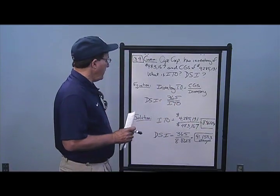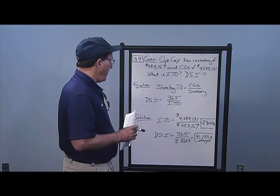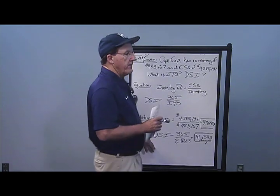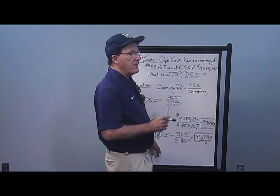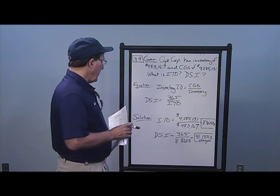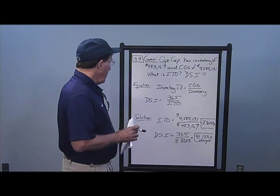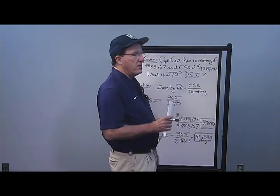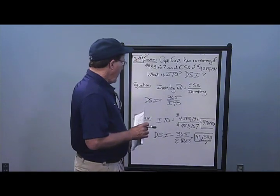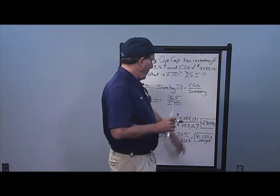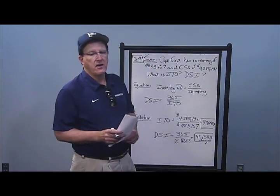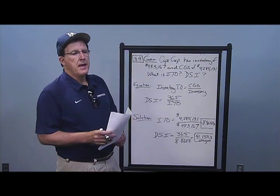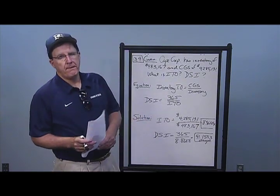Days sales in inventory is 365 over inventory turnover, telling us how many days of inventory are sitting there. Taking 365 over 8.8688, I get 41.1553 days sales in inventory. Those are the answers to Problem 4.